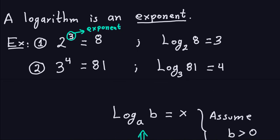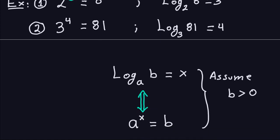The formal definition is: log base a of b equals x is equivalent to saying a to the power x equals b. We assume that b is positive, that a is greater than zero, and that a is not equal to one. That's basically the definition you probably saw in college algebra. The discrete logarithm problem has some relation to this definition, but applies in a discrete sense.